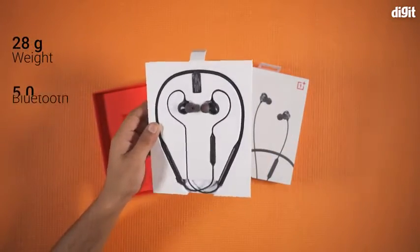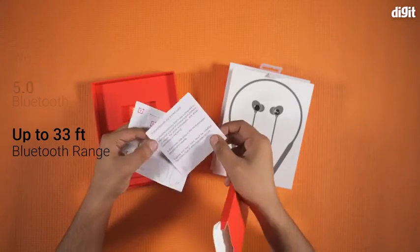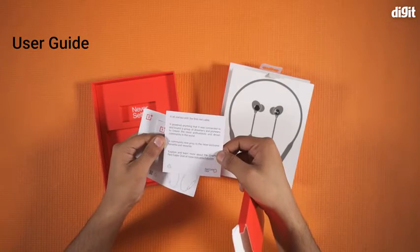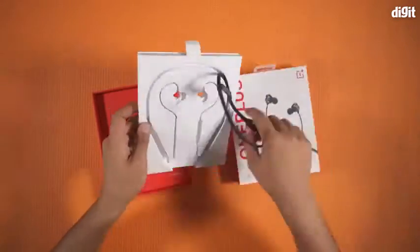The box slides open and you can see the earphones neatly packed inside. Keeping it aside, there's a smaller box with the user manual. Let's take a look at the Bullets Wireless Z.